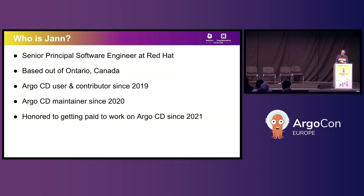A little bit about me — I work with Jan on a day-to-day basis. I'm the PM for OpenShift GitOps at Red Hat, so I work with the Red Hat engineers and the upstream Argo community to help figure out what we should build next.